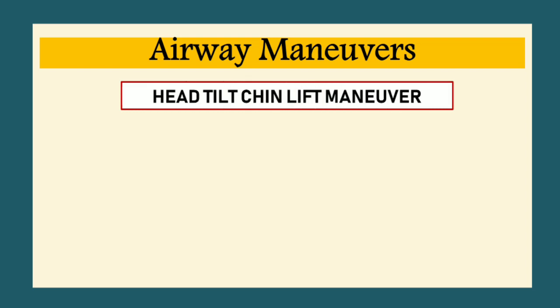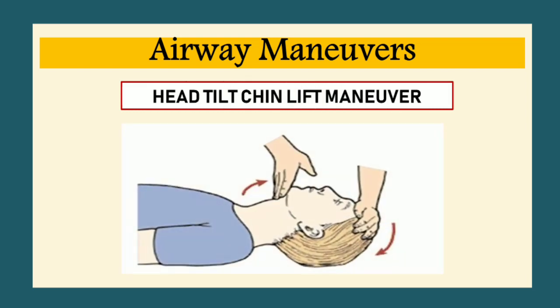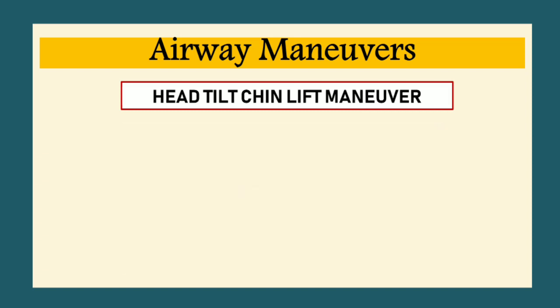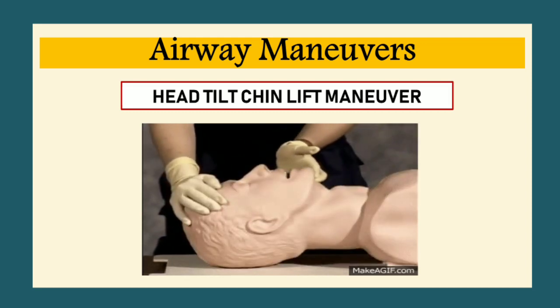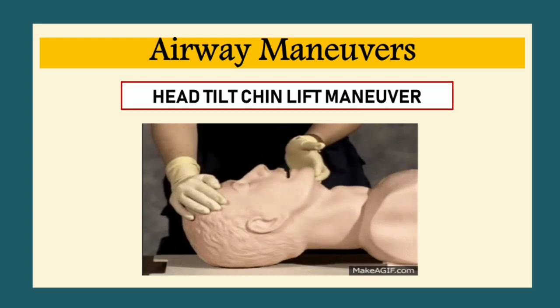Let's see in detail one by one. First, basic airway management — the head tilt-chin lift manoeuvre. Tilt the patient's head back by pushing down on the forehead. Place the tips of your index and middle finger under the chin and pull up on the mandible. This lifts the tongue away from the posterior pharynx and improves airway patency. Be sure to pull up only on the bony part of the mandible, as pressure to the soft tissue of the neck may obstruct the airway.